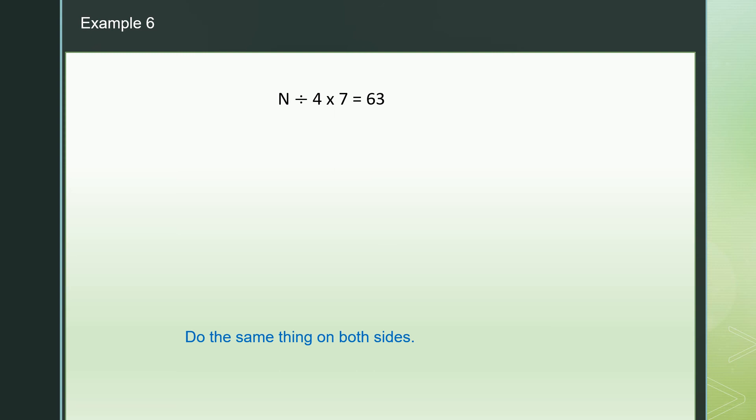n divided by 4 times 7 equals 63. On the left we don't want times 7, so we divide by 7: gone. On the right: 63 divided by 7 equals 9. So n divided by 4 equals 9. On the right: 9 times 4 is 36, so n equals 36.